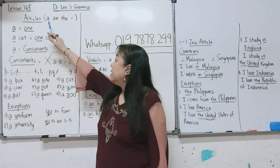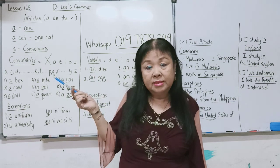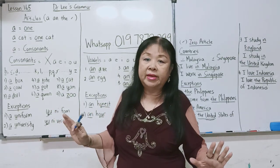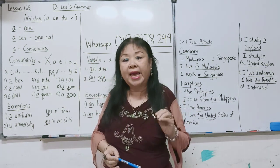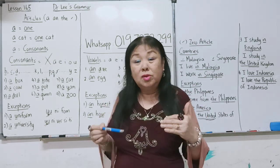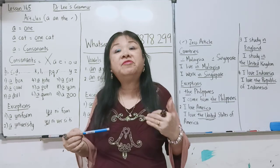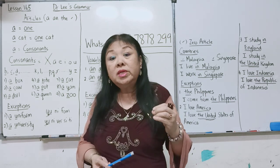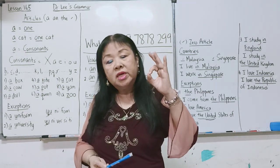Lesson 165 — Articles. In grammar, we call it Articles. Articles means 'a', 'an', 'the', or zero — you don't put anything. 'A' means one. For example, a cat means one cat. When we talk using a language, we don't say 'I have one cat' — we say 'I have a cat at home.' We use 'one' for mathematics or science where we need to use digits.